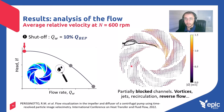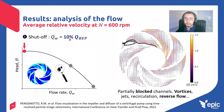This is the first example of a result. We are now looking at the average relative velocity fields at 600 revolutions per minute. We start by looking at the shutoff point, which is basically a very low water flow rate, below 10% of the best efficiency point. In this case, we can see that all the channels have a very complex flow structure. There are partially blocked channels, especially here on the left, full of vortices, jets, and regions of recirculation and reverse flow.